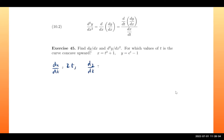dx/dt equals 2t, and dy/dt equals e^t. So dy/dx, dividing those two, gives us e^t over 2t. That is the first derivative.